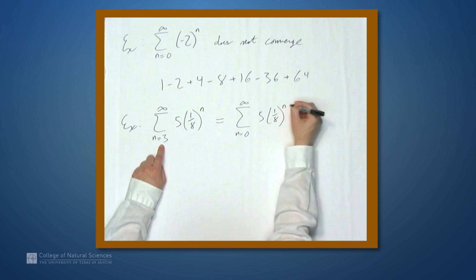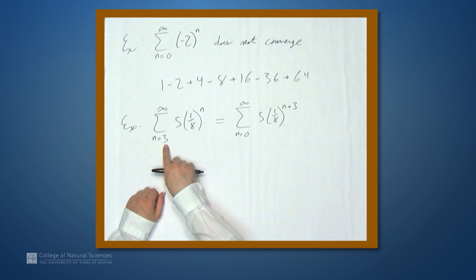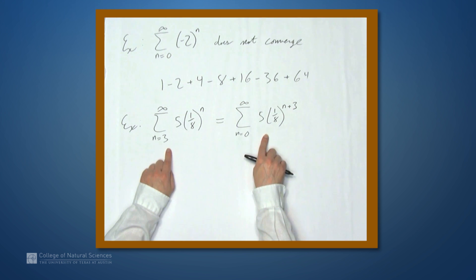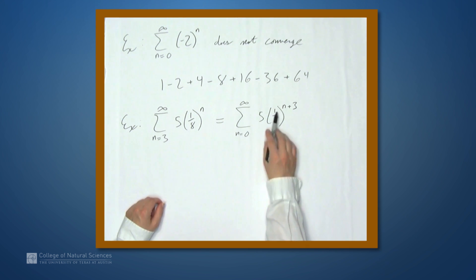So when n equals 3, this is the first term in this series, we get 5 times 1 eighth to the third power. And now if we start with n equals 0, the first term in this series is 5 times 1 eighth to the 0 plus 3. Or again, 5 times 1 eighth to the third power. So these two series are the same, but now we start with the correct index. Of course, now we have a different problem because r is no longer being raised simply to the nth power, it's being raised to the n plus third power.